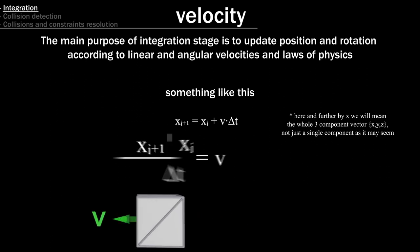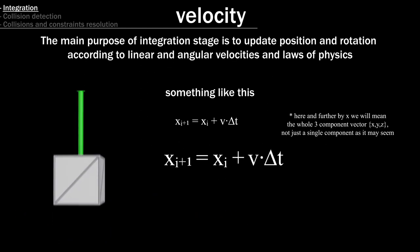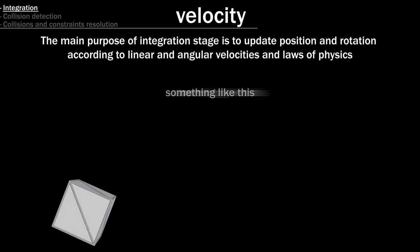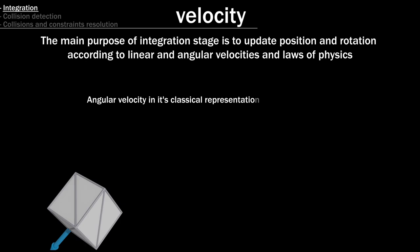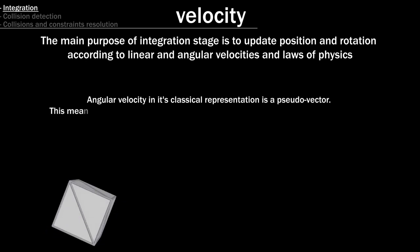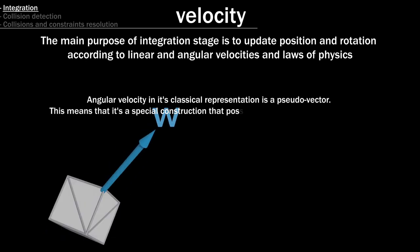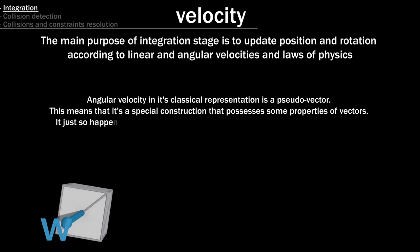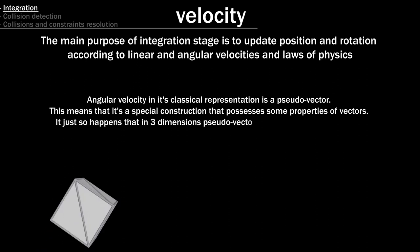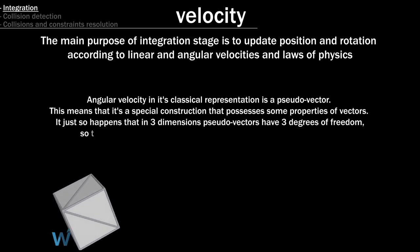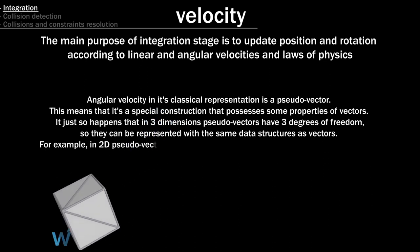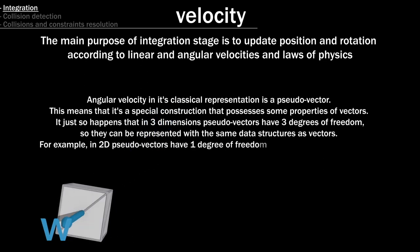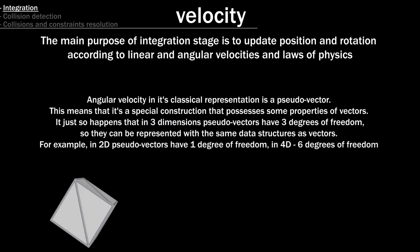So if with linear velocity it's pretty straightforward, angular velocity is a bit more tricky. Angular velocity in its classical representation is a pseudo-vector. This means that it's a special construction that possesses some properties of vectors. It just so happens that in three dimensions pseudo-vectors have three degrees of freedom, so they can be represented with the same data structures as vectors. For example, in 2D pseudo-vectors have one degree of freedom, in 4D, six degrees of freedom.